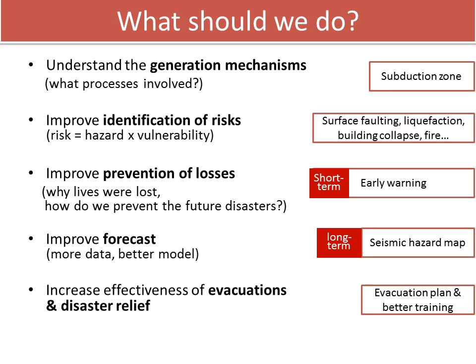Using earthquake as an example: most magnitude-greater-than-8 earthquakes occur in a subduction zone, so you need to know where stress is highly accumulated and why. To identify risk, you need to map out the active faults, spots for liquefaction, and where building collapse is expected. Prevention of losses in the short term goes to earthquake early warning, and the long-term forecast model goes to seismic hazard maps, along with earthquake evacuation plans for different buildings and public areas.